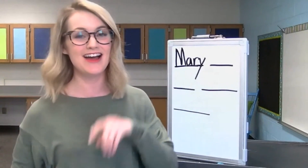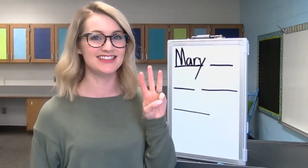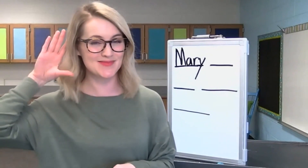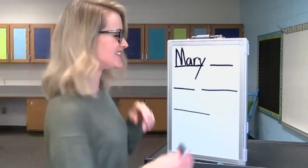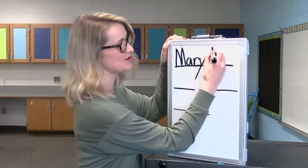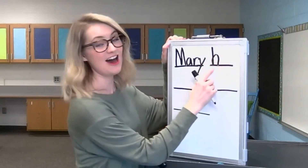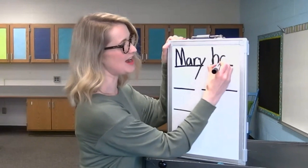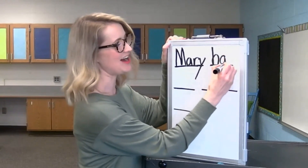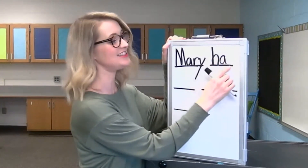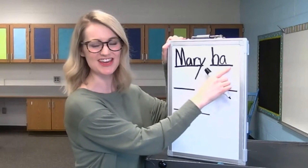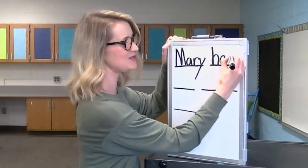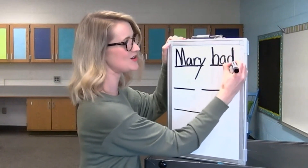Let's stretch out the word had: H-a-d. Had. What sound do you hear at the beginning of that word? Yes, an H. Start at the top, go down, back up, and make a hump. H-a-d — that's an A. Start in the middle, around like a C, go up, and go down. H-a-d. What sound do you hear at the end of that word? Yes, a D. Start in the middle, make a C, go up, and go down.